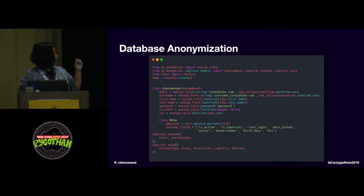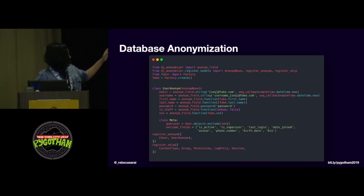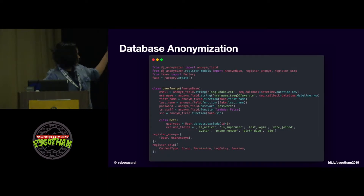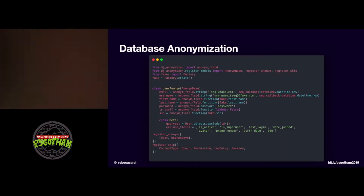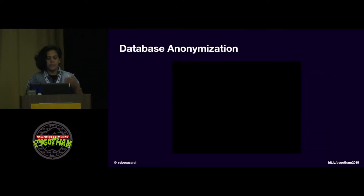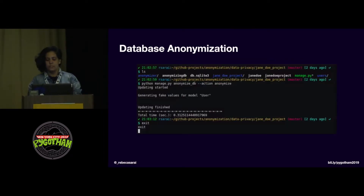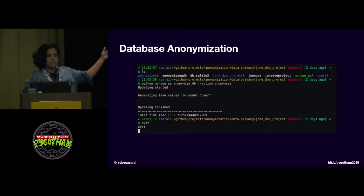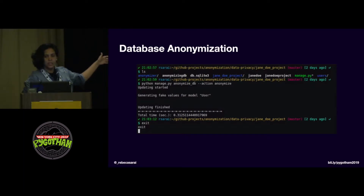We define how we want to anonymize the fields — email, username, first name, last name, and all these things. We use a Faker library to generate fake data, then register it and run. This is a video but I'll show you the screenshot. We run a command like regular Django management commands and anonymize the entire user model very quickly.